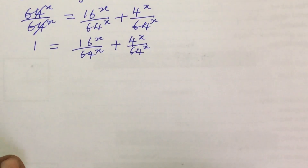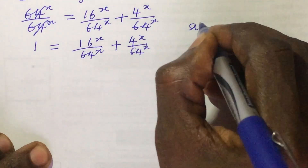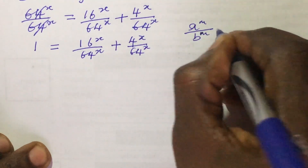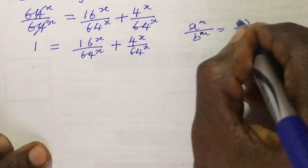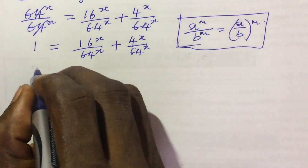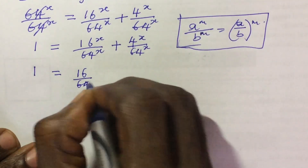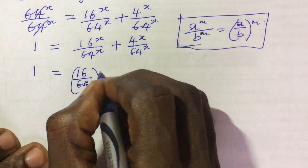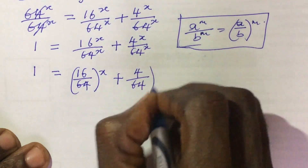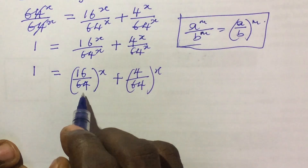Now from here we proceed. We can rearrange this expression because if we have a to the power of m all over b to the power of m, this is the same thing as a all over b, all to the power of m. If we apply this rule to our expression we're going to have 1 equal to 16 all over 64, all to the power of x, plus 4 all over 64, all to the power of x.